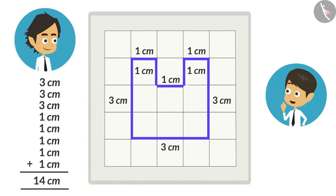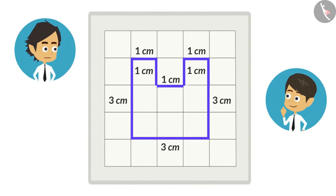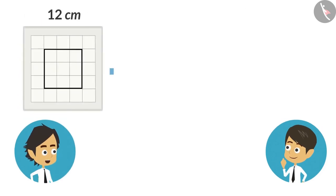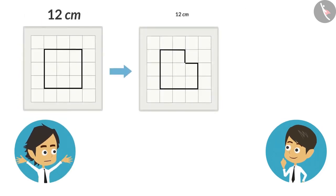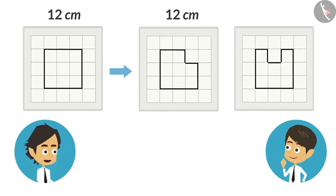That means changing the shape of figure changes the size of its boundary. No, when you change the shape, the length of the boundary did not change. But when I change the shape, the length of the boundary changed. This means changing the shape may change the length of its boundary or may not change the length of its boundary.